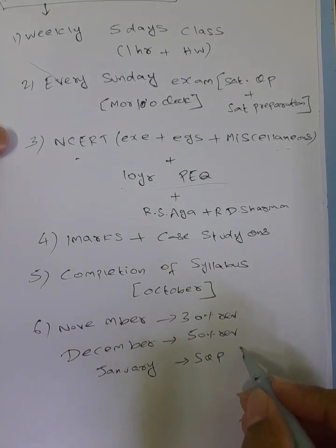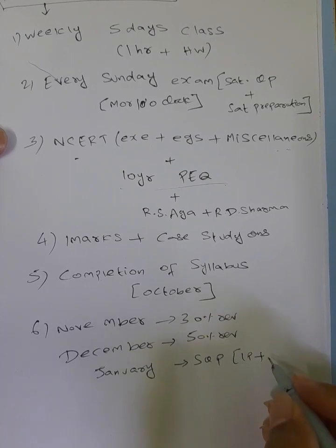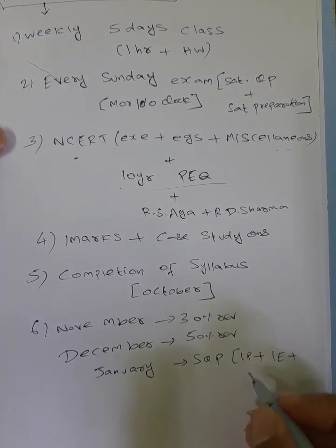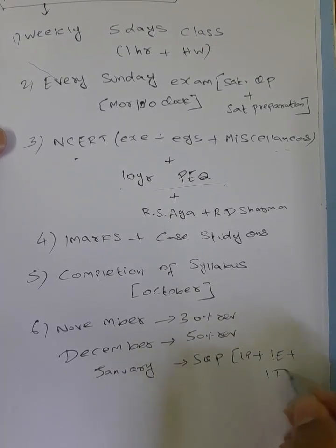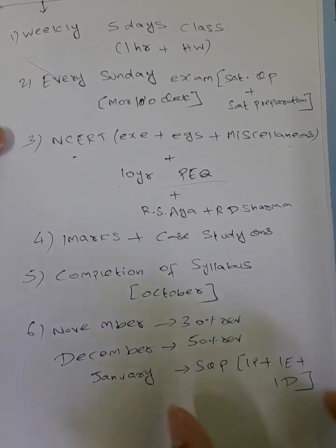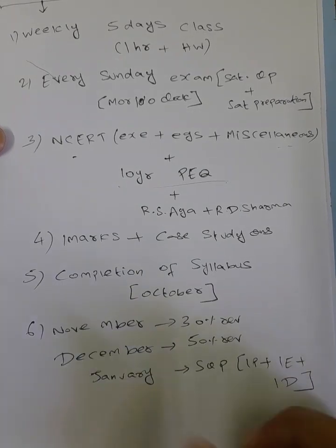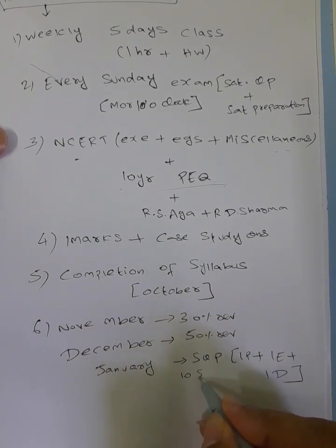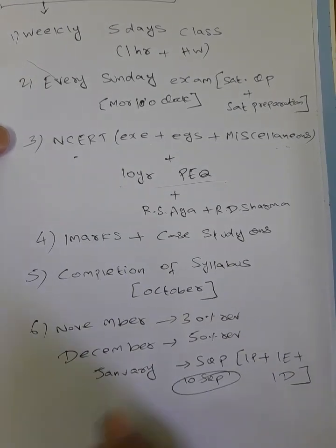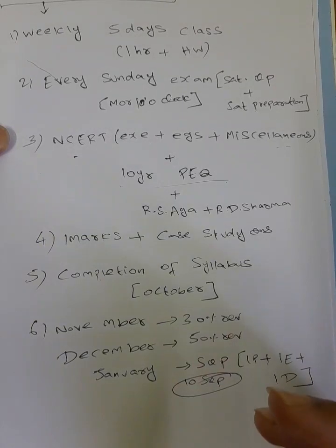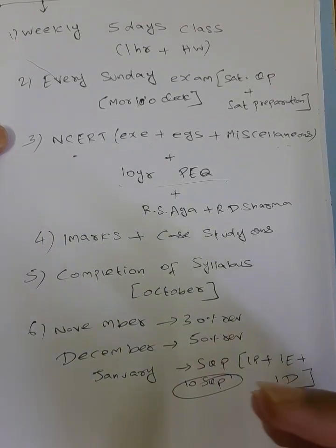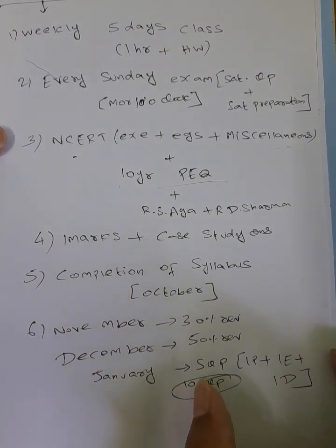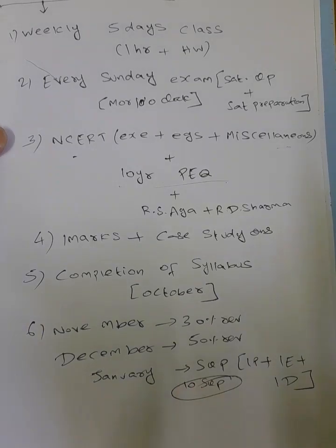One day preparation, one day exam, next day doubt clarification — this is 3 days. January full: minimum 10 sample question papers. In case February date is extended, February 1 week class. But January full, you can send sample question papers.